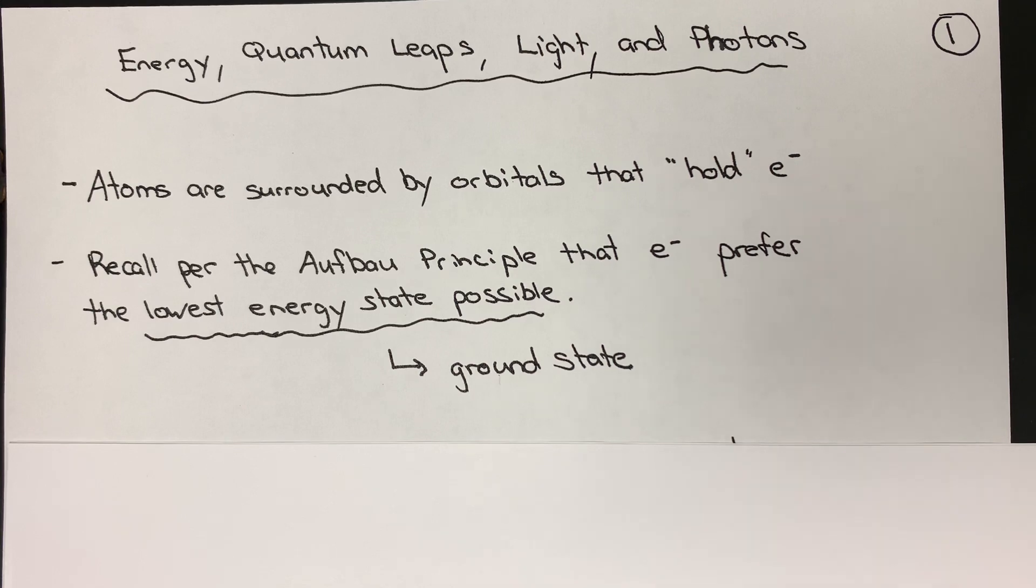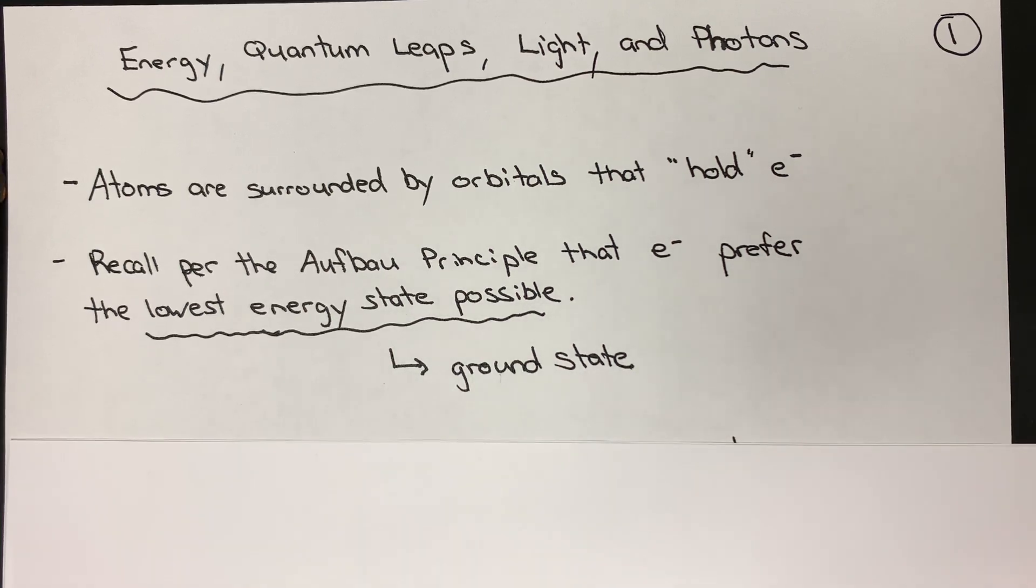Also recall from class the Aufbau Principle that states electrons prefer the lowest energy state possible. This is what we refer to as their ground state. Think of the ground floor of a building - it's going to be your lowest floor possible.